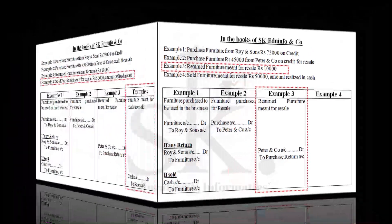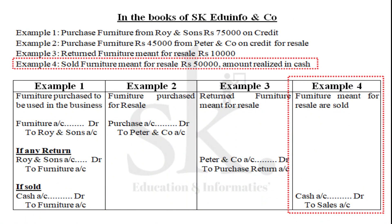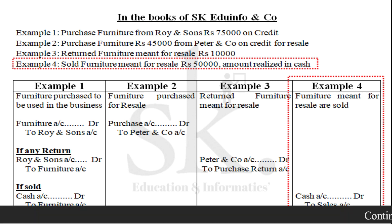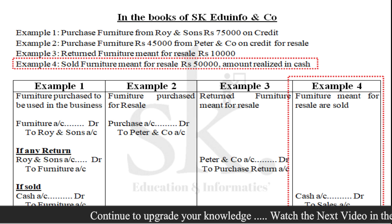Example four: sold furniture meant for resale, Rs. 50,000, amount realized in cash. Since the furniture is meant for resale, selling it is treated as selling goods. The entry is Cash Account Debit to Sales Account. Comparing with Example 1 — selling furniture used in the business was credited to furniture account. In Example 4, since the furniture was for resale, we credit sales account instead of furniture account.